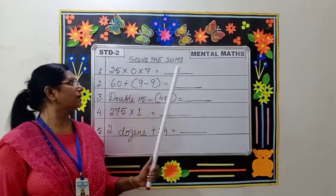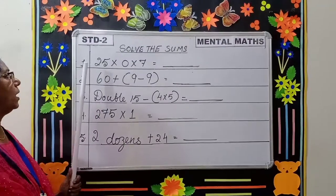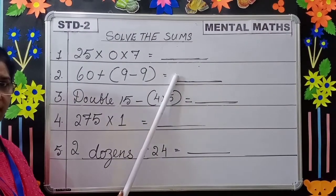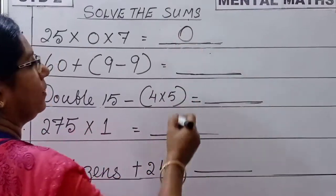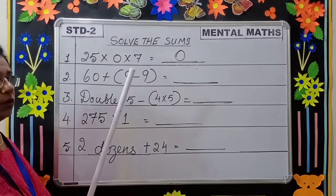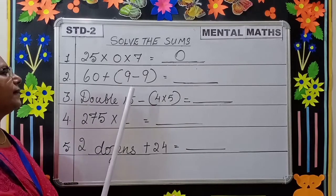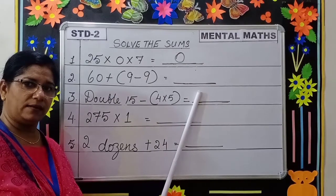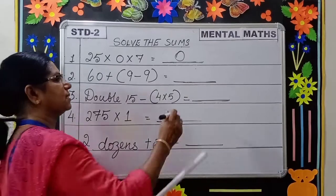The third topic is solve the sums. Question number one: 25 into 0 into 7 is equal to dash. The answer is 0, because any number multiplied by 0 will be 0. Moving to the second question: 60 plus 9 minus 9 is equal to dash. 9 minus 9 is 0, so 60 plus 0 is equal to 60 itself.